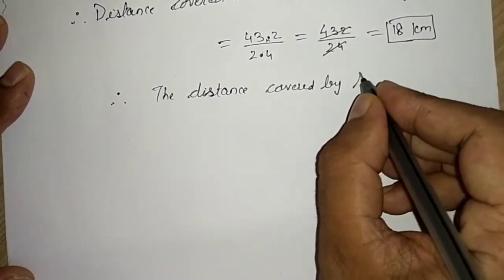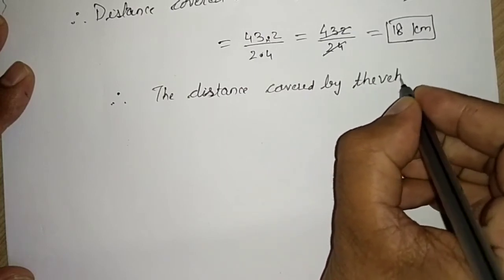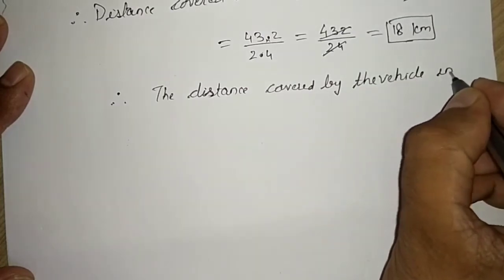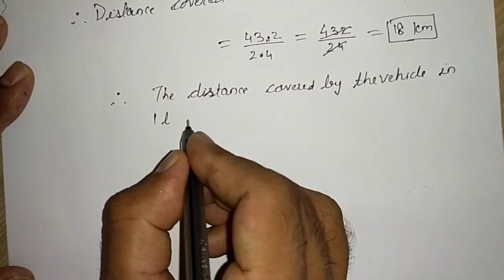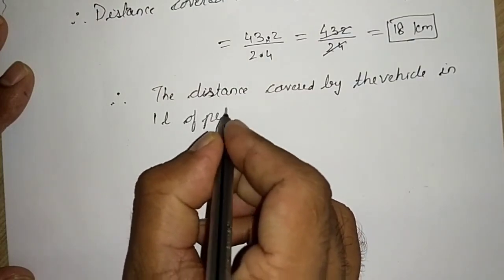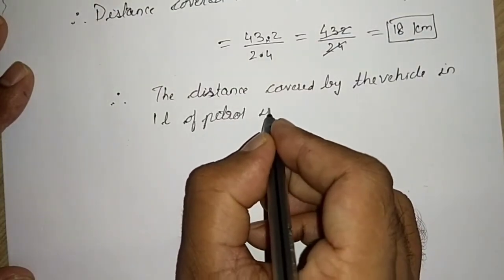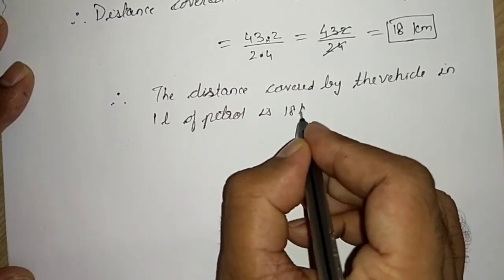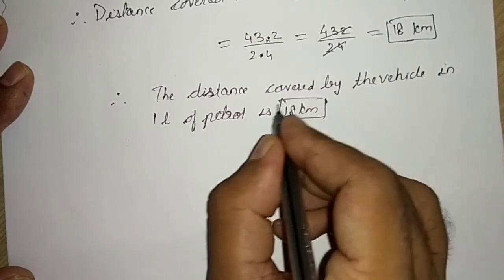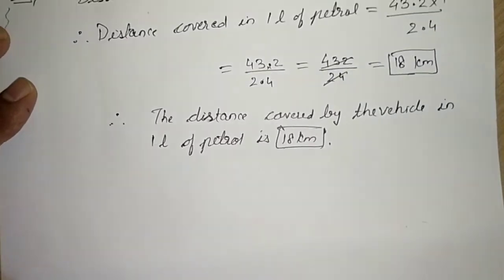Hence, therefore, the distance covered by the vehicle in one liter of petrol is 18 kilometers.